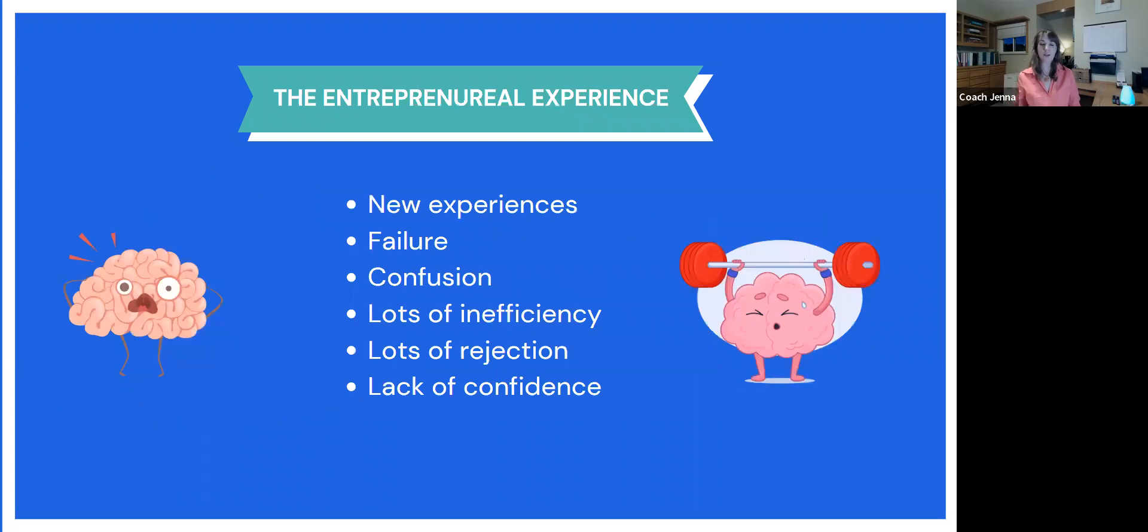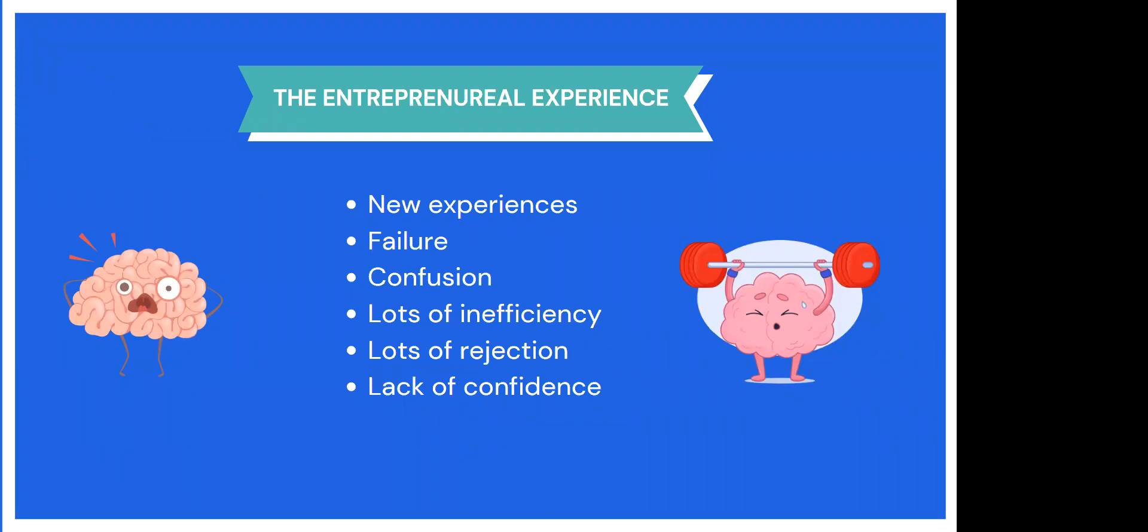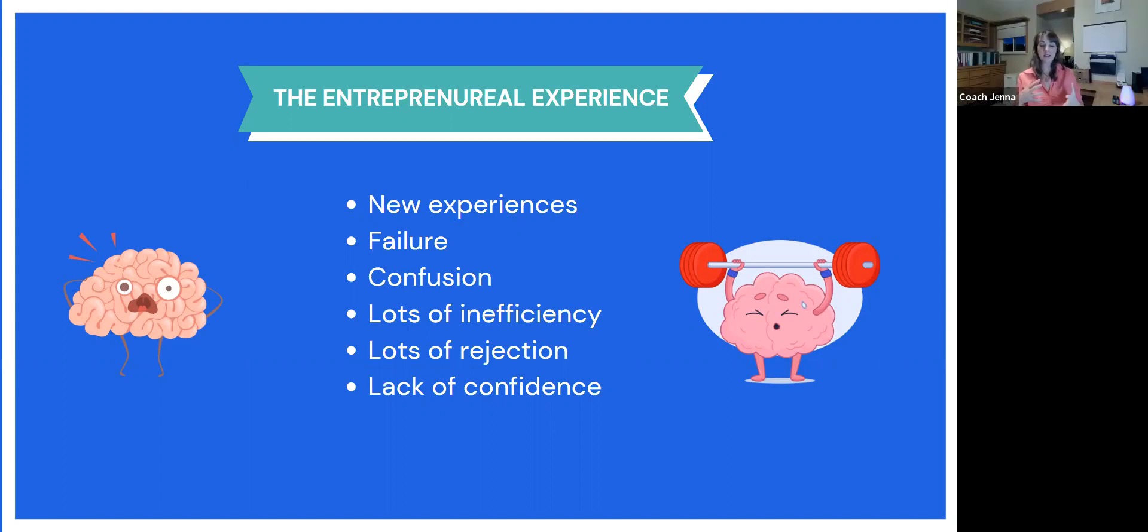So let's talk about the entrepreneurial experience. In the entrepreneurial experience, you're going to be faced with a lot of new experiences, which are very inefficient for the brain. Remember, the brain likes to stay efficient. It doesn't know what to do with these inefficiencies. Maybe you're trying to learn something new, like TikTok or Instagram or a new database system. And all of this learning, it's just all new experiences. You're also going to face a lot of failure. There's going to be something that you try that just doesn't work. And our primitive brain wants to avoid failure at all costs. Back in like caveman days, failure could actually mean death.